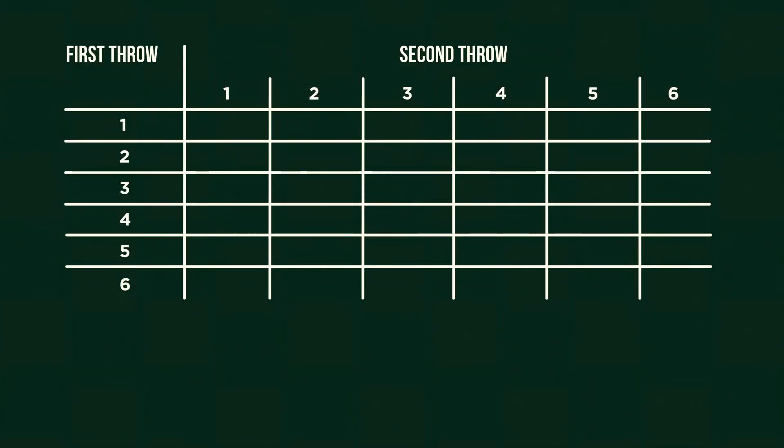Firstly, we should draw the required sample space. We can then highlight the outcomes which match the question. There are 9 crossover points, so 9 outcomes that work for us. Because there are 36 possible outcomes, our answer is 9 over 36, simplified to 1 quarter.